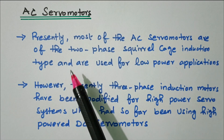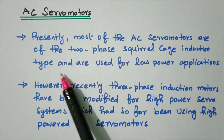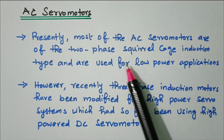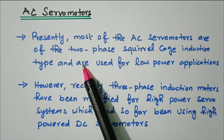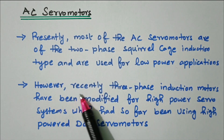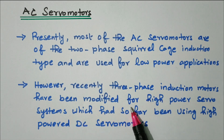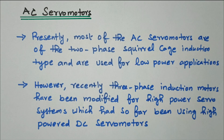So in this video we'll see the AC servo motor. Construction-wise, most of the AC servo motors are of the two-phase squirrel cage induction type and used for low power applications. It has one fixed phase and another control phase. Recently, three-phase induction motors have been modified for high power servo systems, which had so far been using high power DC servo motors. Now we'll see these one by one, starting with the two-phase AC servo motor.